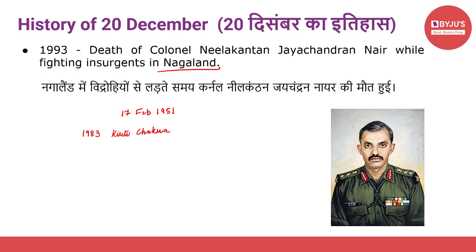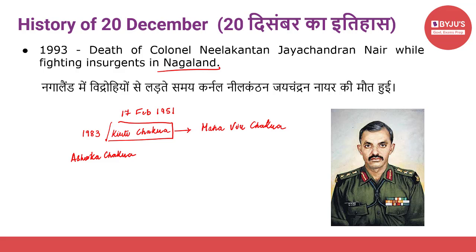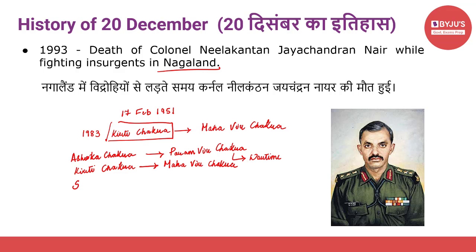Kirti Chakra is the second in order of precedence of peacetime gallantry awards, and is the peacetime equivalent of Mahavir Chakra. Regarding the order of peacetime gallantry awards: Ashoka Chakra is India's highest peacetime decoration, equivalent to the wartime Paramvir Chakra. Next in order is Kirti Chakra, whose wartime equivalent is Mahavir Chakra. After that comes Shaurya Chakra, followed by Sena Medal.